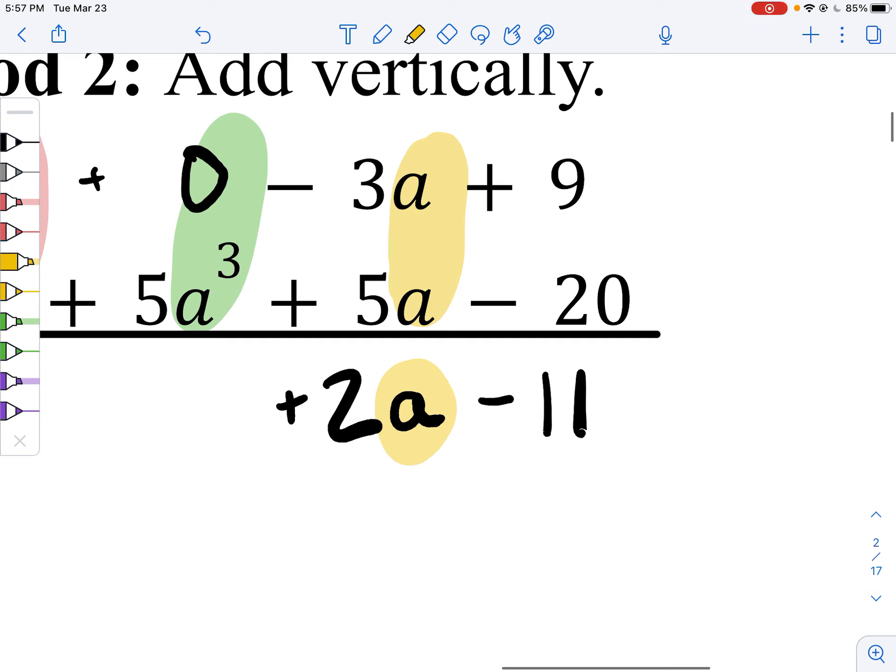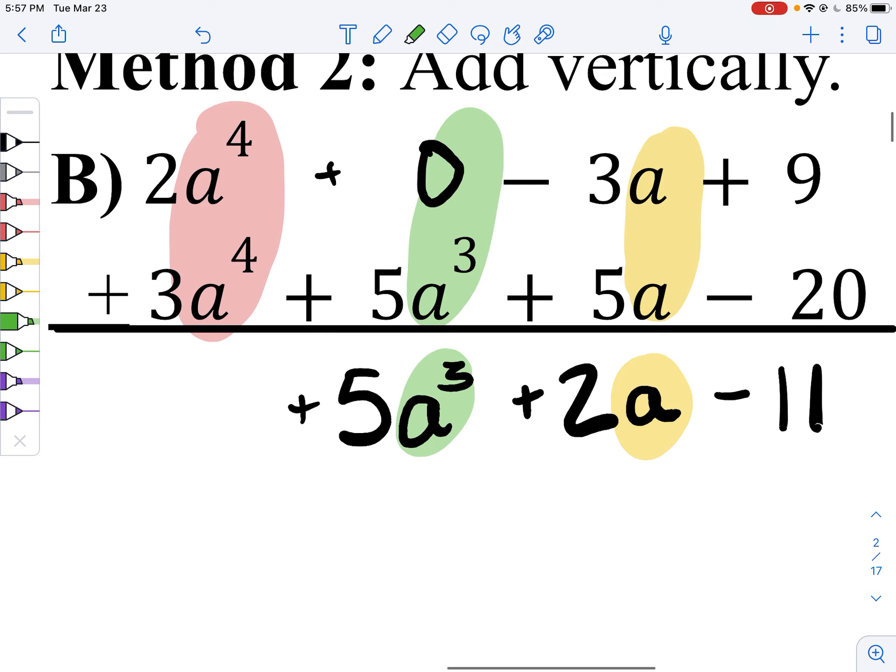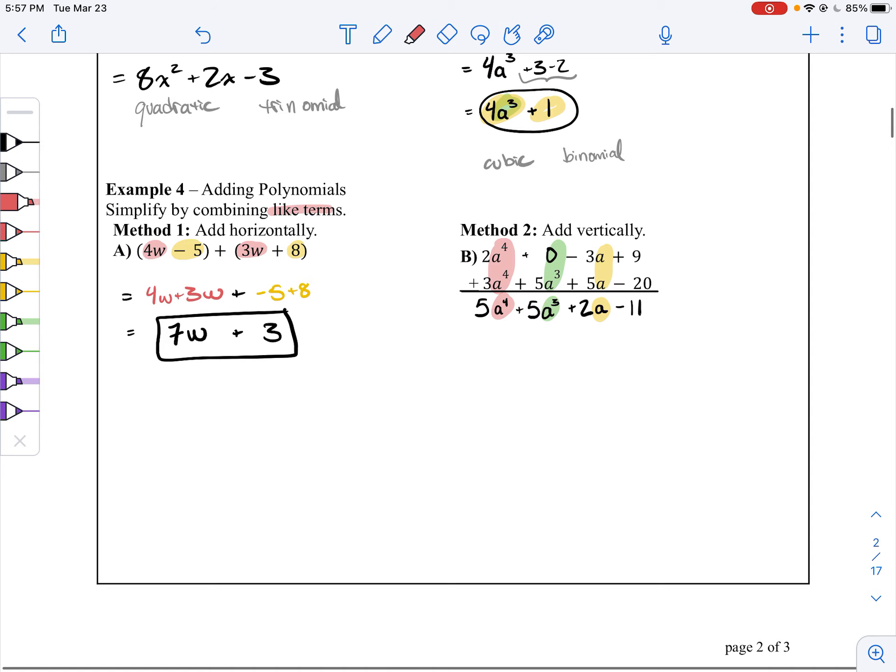0 plus 5 is a positive 5. And then finally, 2 plus 3 is 5, a to the fourth power. Look, we combined like terms, how nice is that? And that will be our final answer.